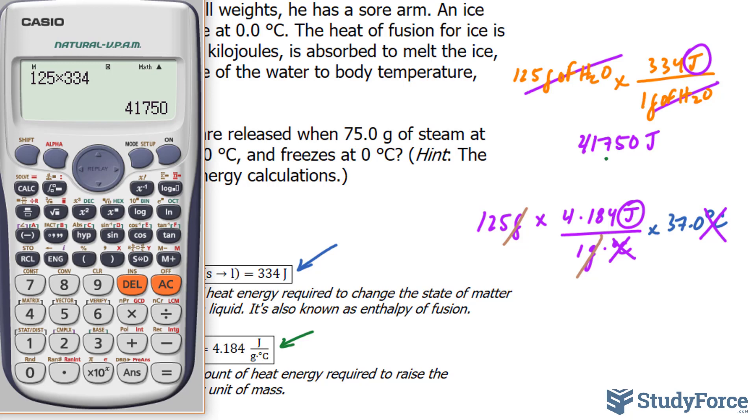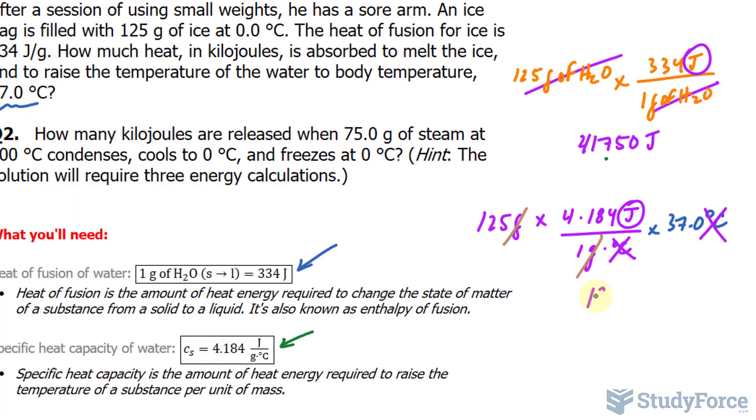So let's go ahead and calculate this and we'll interpret what's happening in a moment. So 125 times 4.184. And multiply this now by 37.0. This number should be to three significant figures. I'll write down everything, 1, 9, 3, 5, 1 joules. And I'll place a dot right there signifying the last significant digit.